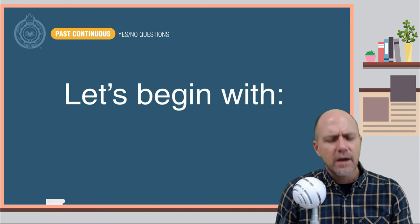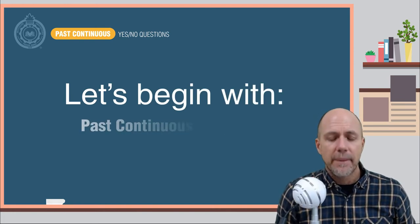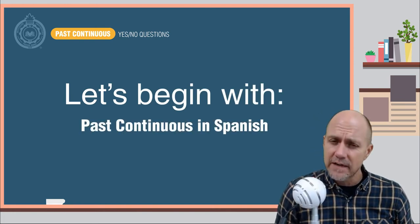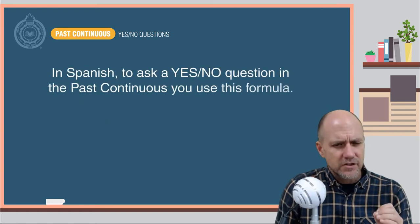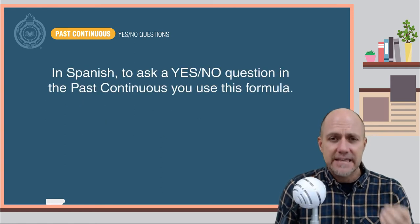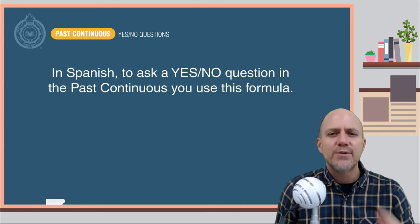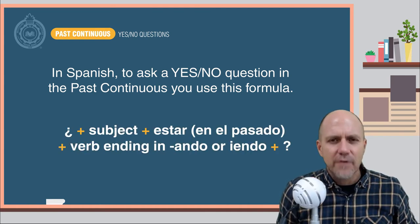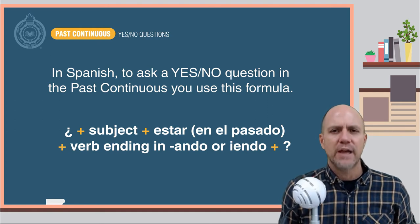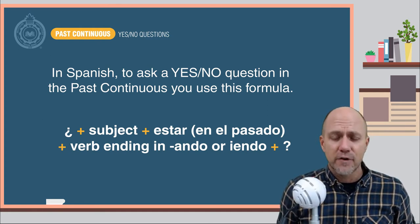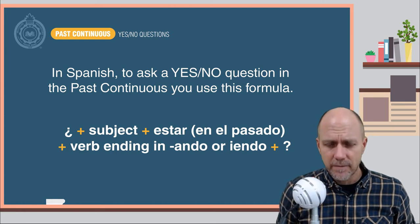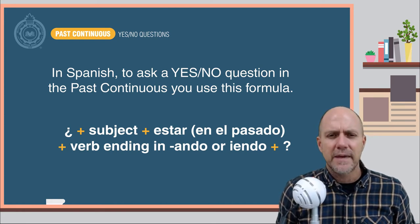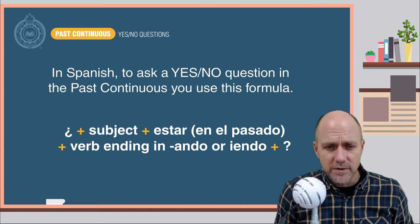Let's begin with what you already know: the past continuous in Spanish. In Spanish, to ask a yes-no question in the past continuous, you use this formula: an upside-down question mark, plus the subject, plus the verb estar in the past, plus the verb ending in -ando or -yendo.